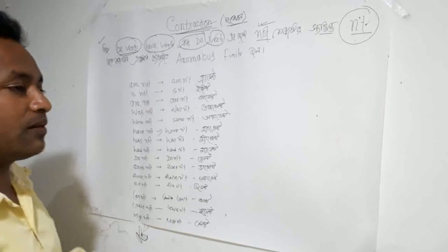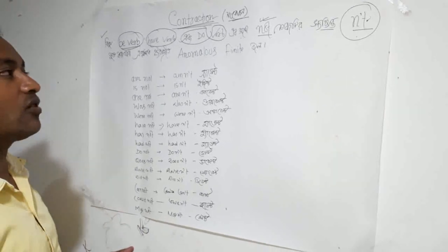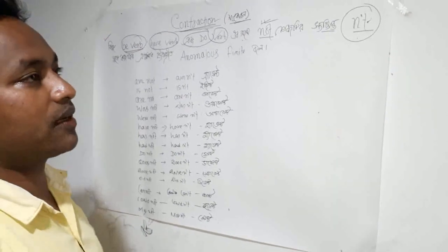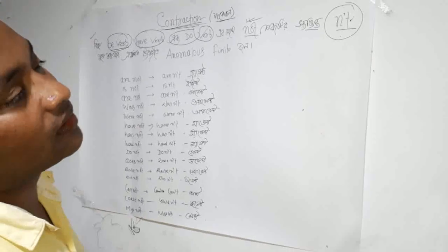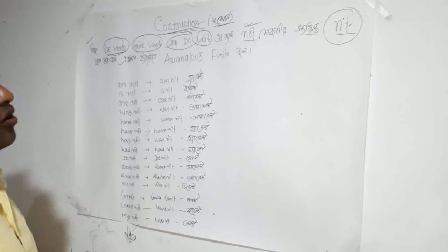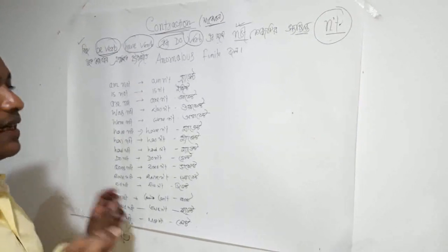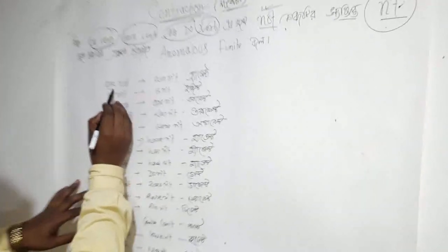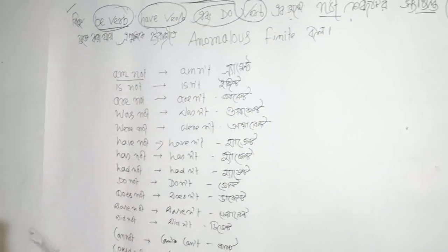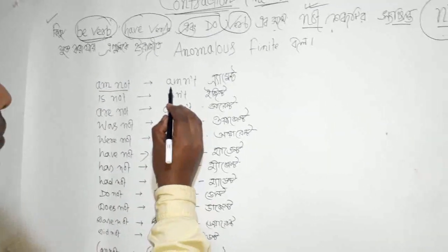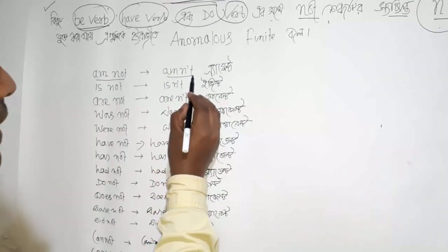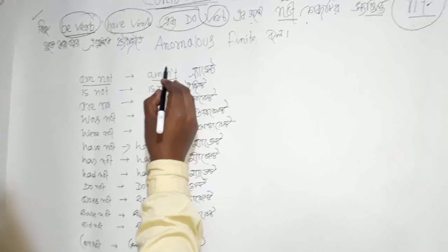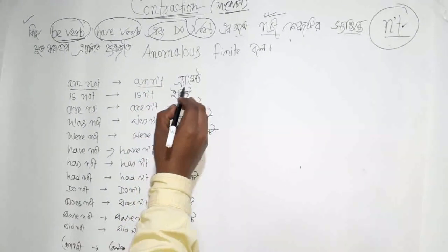We have to listen to sentences as well as spoken language. This is the standard form of the contraction which we use — it is the standard form. First: 'am not' — 'am not' is the contraction form which we use.